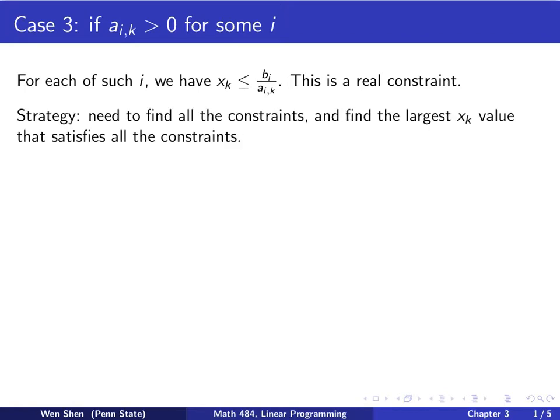So here will be the strategy if we are in this case. We would need to find all these constraints, going through all the coefficients a_i,k that are positive, find out what constraints do they give to me, and then we should find the largest possible value of x_k such that all the constraints are satisfied.